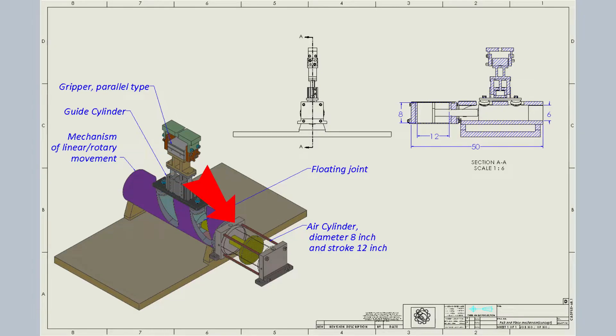Air cylinder diameter 8 inch and stroke 12 inch, floating joint.